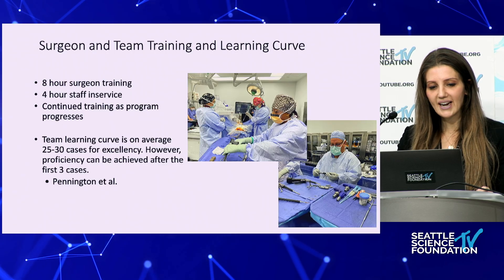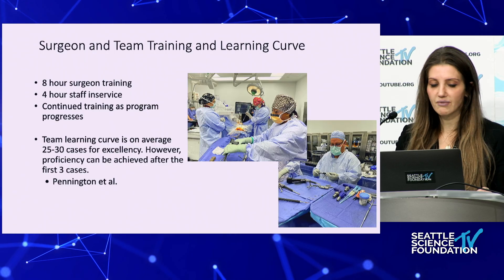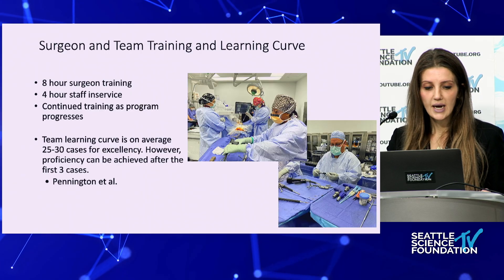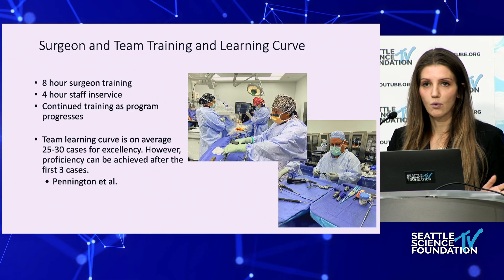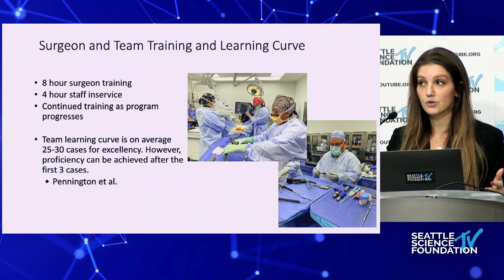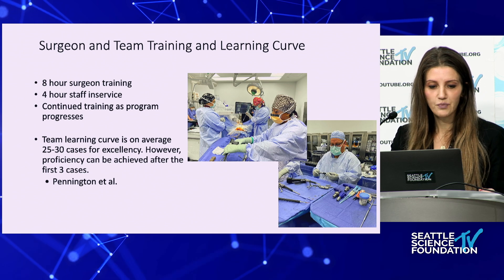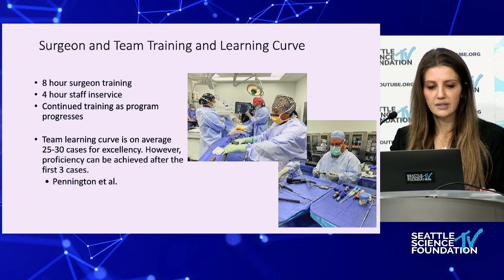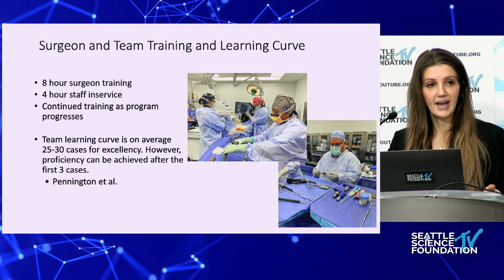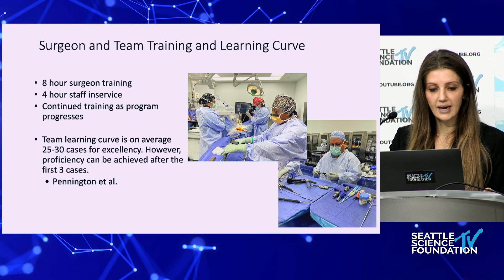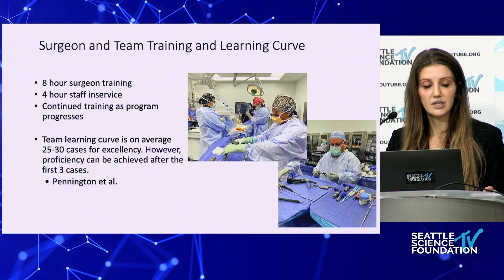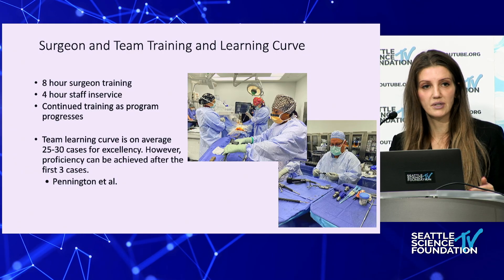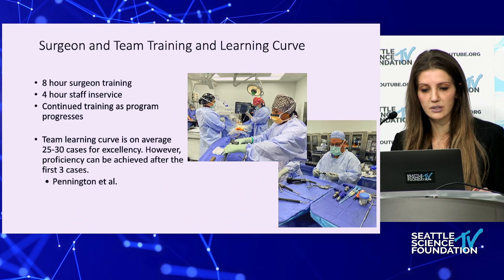We did an eight-hour surgeon training, four-hour staff in-service, and continued training as the program progresses. I brought my team to Globus about four or five times to ensure they understood how the robot is used. A study by Pennington et al. looks at the team learning curve being 25 to 30 cases for excellency; however, proficiency can be achieved after the first three cases, and we made sure we got those reps in prior to actually operating on any patients.